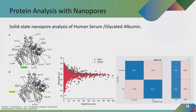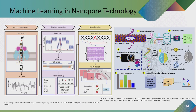In our lab, we are currently interested in working on glycated human serum albumin. By integrating our machine learning model, we can accurately predict glycated human serum albumin with 89 percent accuracy.